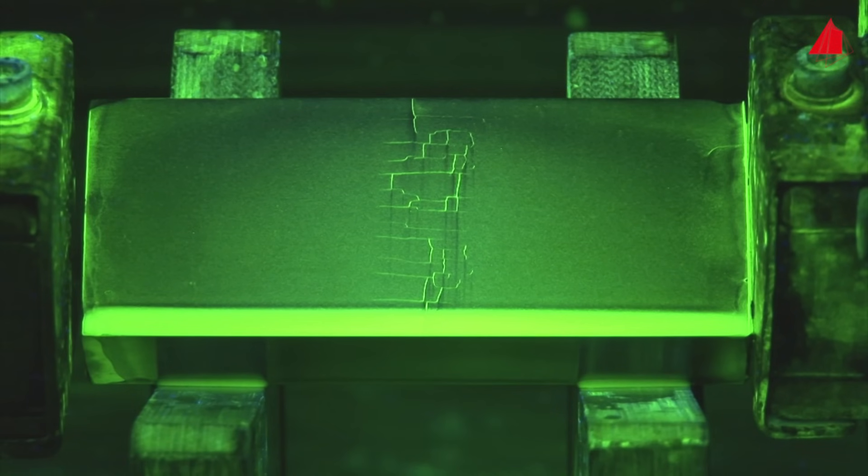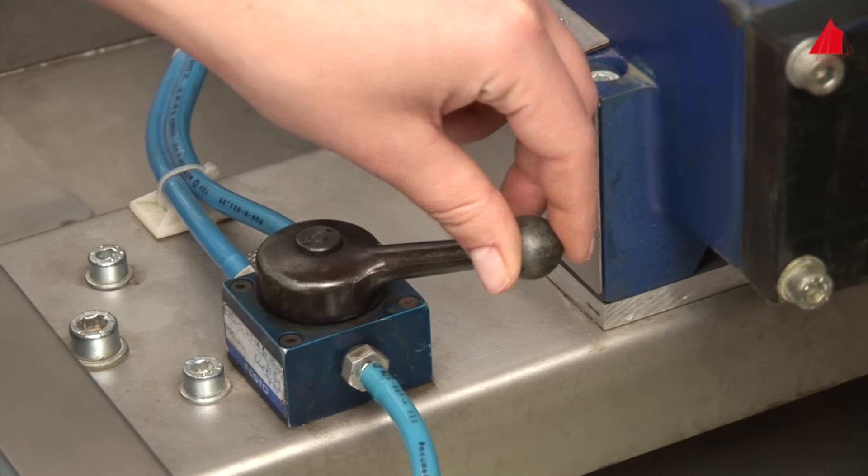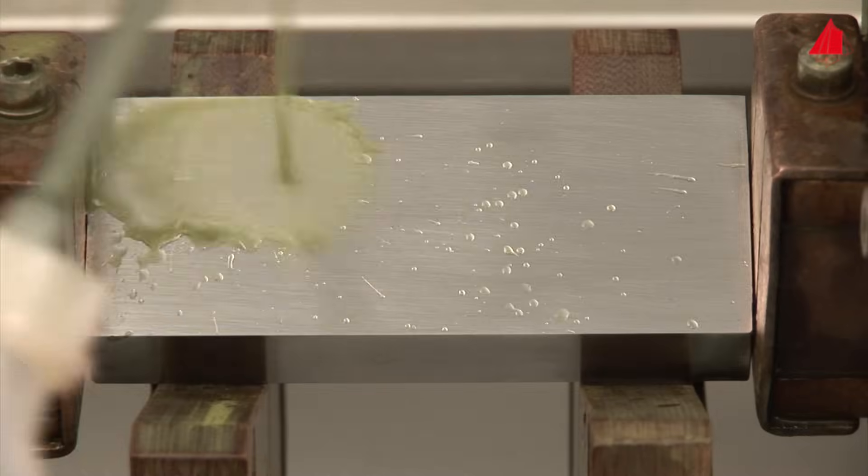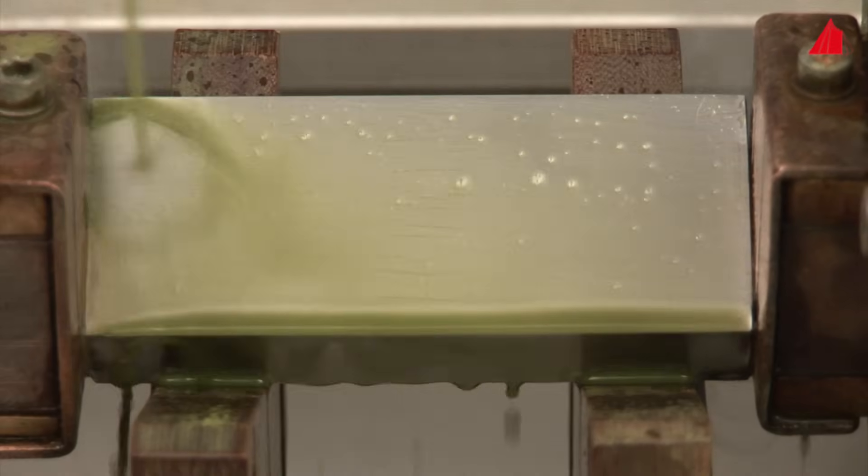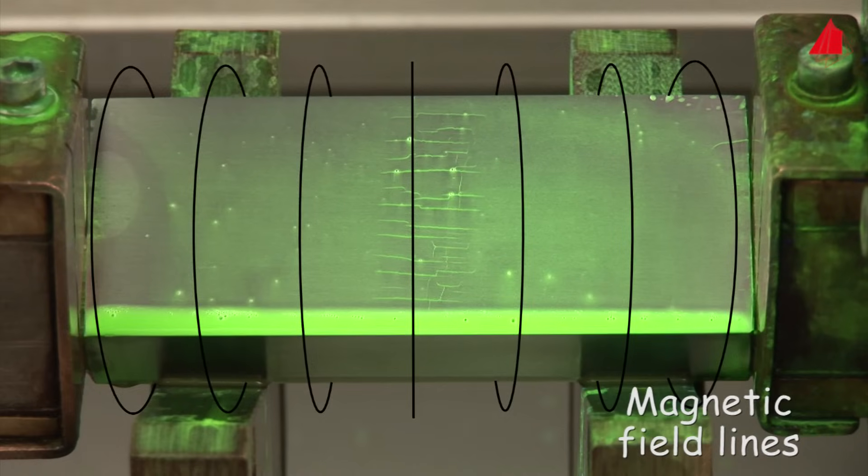To do this, the material tester switches the machine over to the current flow method. A high electric current flows through the sample, generating a circular magnetic field. Now the cracks in horizontal direction can be seen very well. The tested sample is a hardened sliding guide.